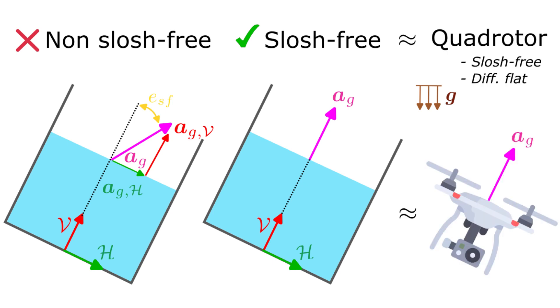The crucial element underlying this approach consists of mimicking the end-effector's motion through a virtual quadrotor, which is inherently slosh-free and differentially flat, thereby allowing us to calculate a slosh-free reference orientation.